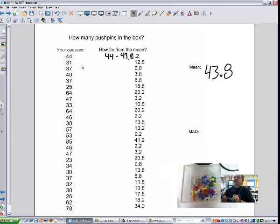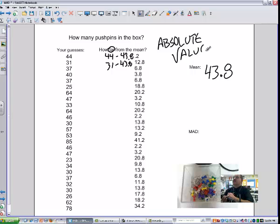All right, there they are. So what I did was I subtracted 44 minus 43.8, got 0.2. I did 31 minus 43.8. I would have probably got negative 12.8. But since we're talking about how far, we want to worry about the absolute value of the thing. So we just took all of our values, whatever they came out to be positive and negative, and made them positive.